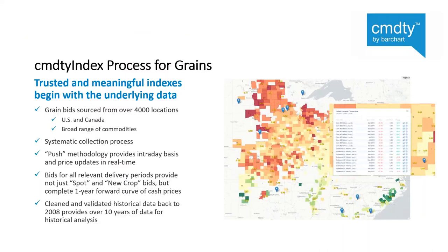To get started, I want to talk about the raw data that underpins the grain indexes. To have trusted and meaningful indexes, you must have a solid foundation of broad, deep, and clean underlying data. Our underlying grain bid data is sourced from over 4,000 grain buying locations, including elevators, terminals, processors such as renewable fuels, producers, and others. We have a very robust and systematic collection process which uses an event-driven push methodology, allowing us to capture not just end-of-day but also intraday basis and price adjustments in real-time.